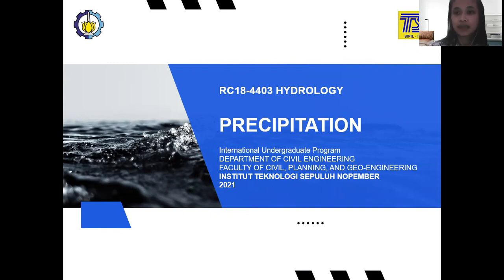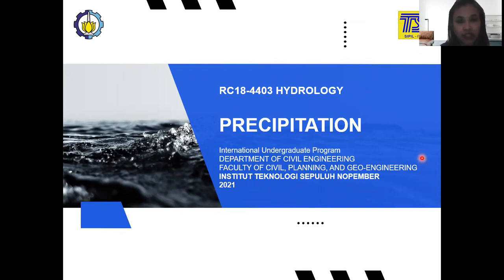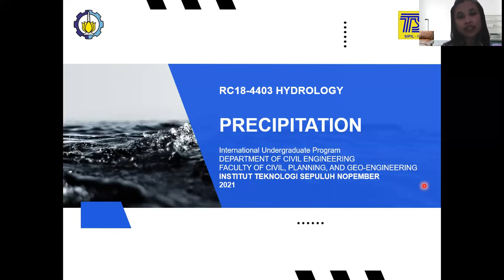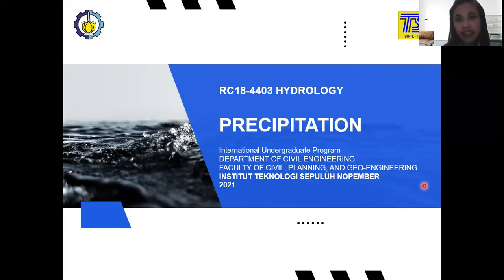Regarding precipitation, this is our first topic after the introduction to hydrology. As you already know from the hydrological cycle, there are a lot of types of precipitation — not only rainfall, but also snow and hail. They are also part of precipitation, but here, because we're in a tropical country, we only focus on rainfall. We're not focusing on snow or hail because it's not too significant for our hydrological cycle in our country.